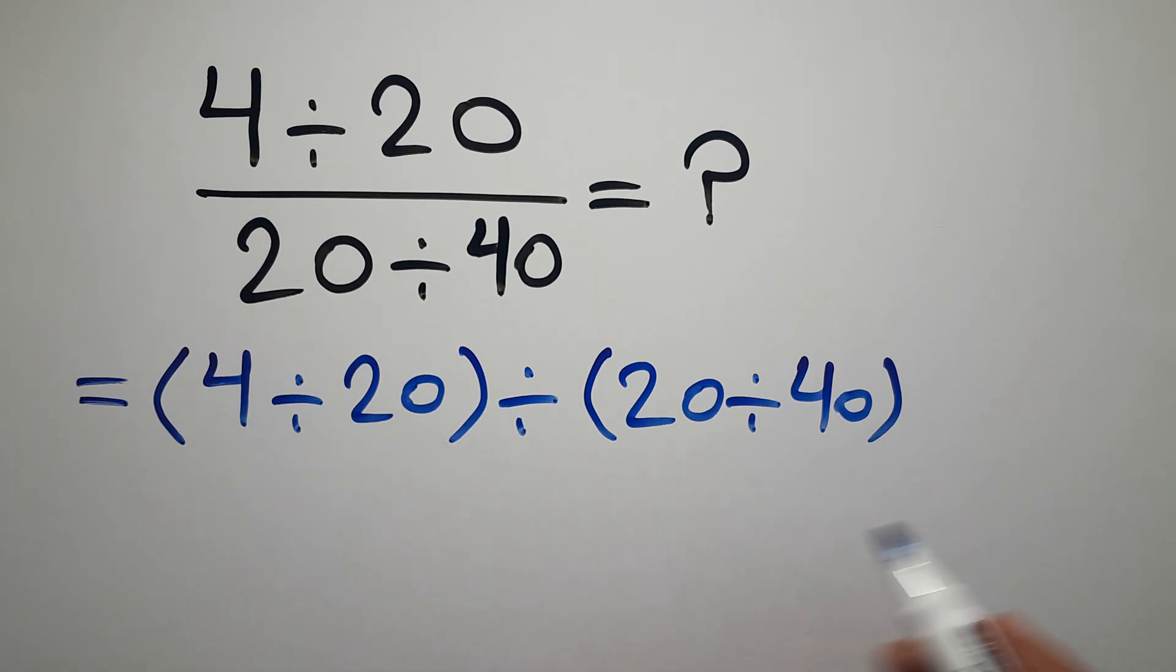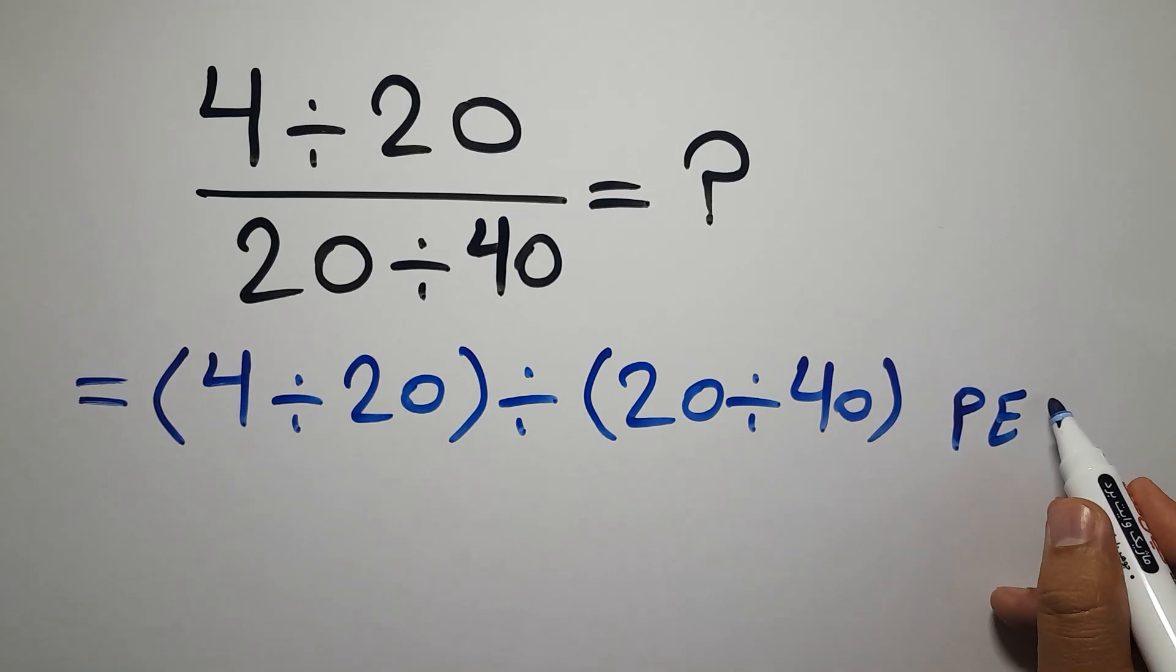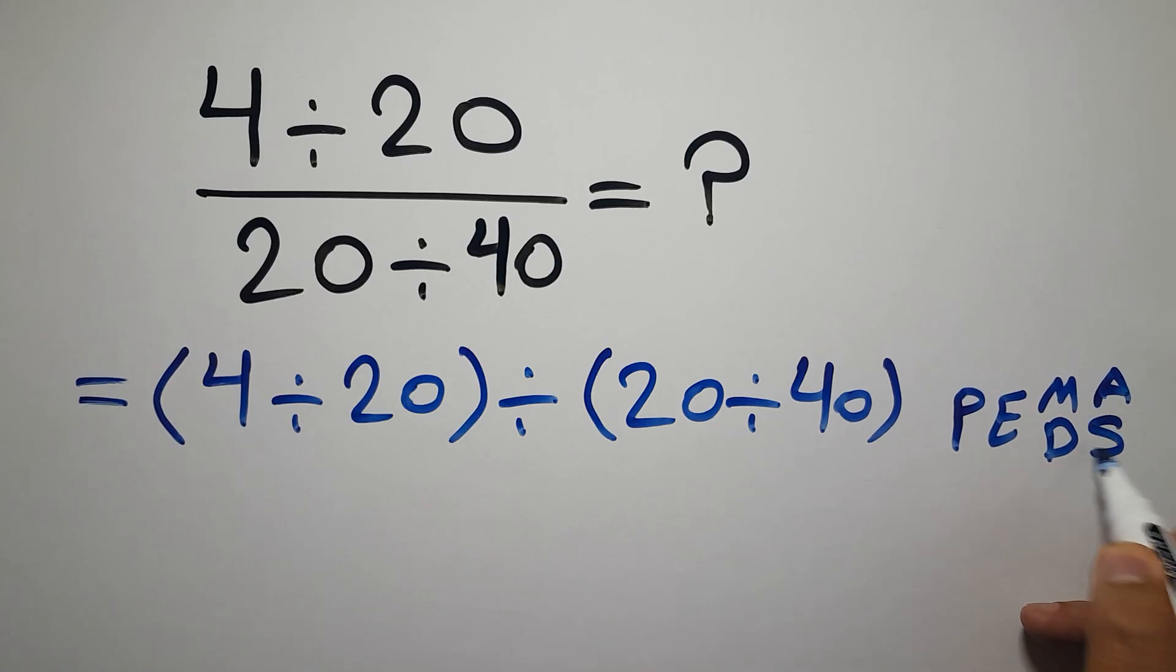According to the order of operations, first we have to do parentheses, then exponents, then multiplication or division, and finally addition or subtraction.